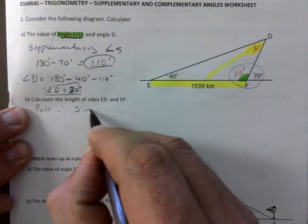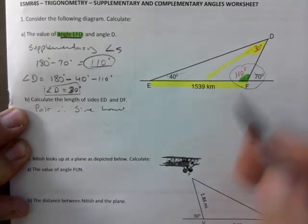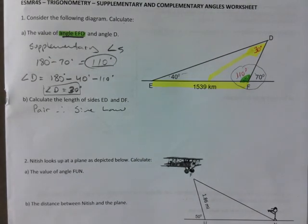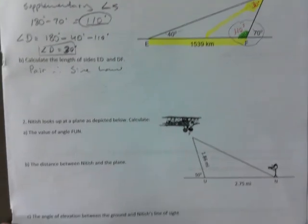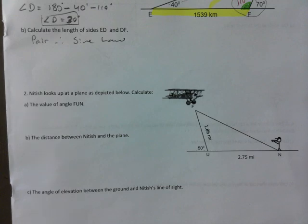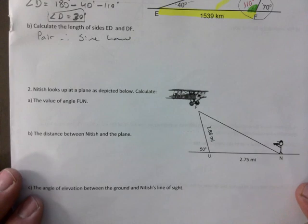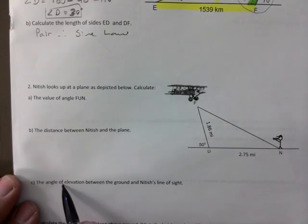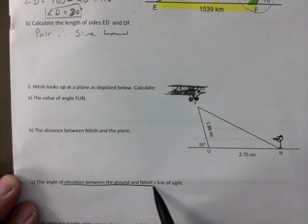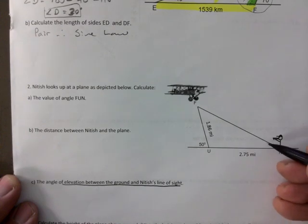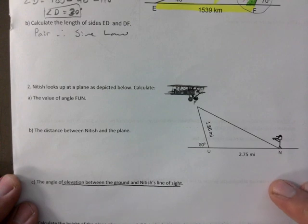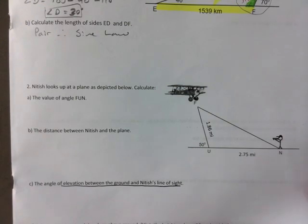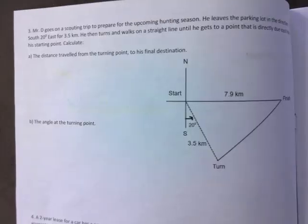Pair. Therefore, sine law. So, you use all that to solve. That's all I'm going to do there. Number 2 is very much like it. It does ask for angle of elevation between the ground and the tissue's line of sight. So, they're asking, you need to figure out where the angle of elevation is. If not, you can look at the key. You should know by now.